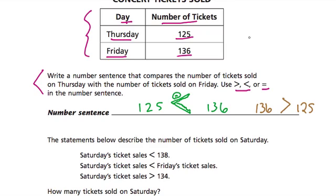Some incorrect examples would be like 125, like this. This is saying that 125 is bigger than 136. Or you could write, if you were at 136, like this. This is also incorrect because, again,